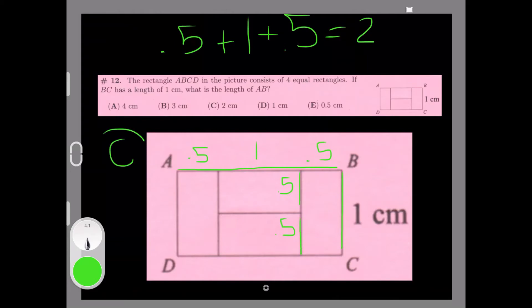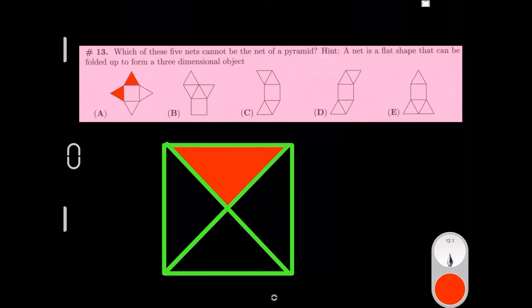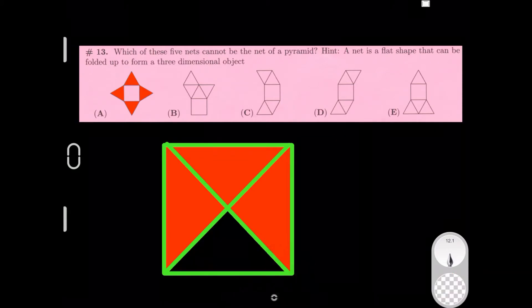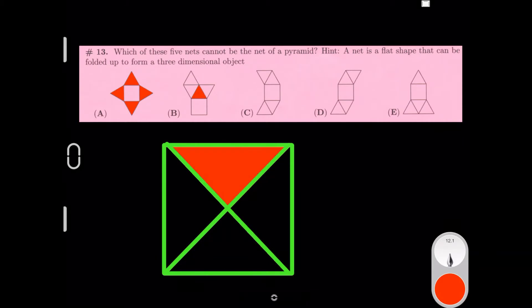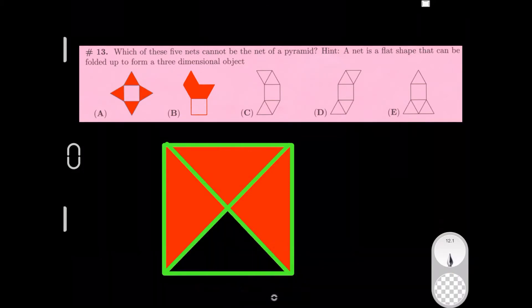So our answer is C. These five nets cannot be the net of a pyramid, so let's look at the first one. This piece right here can go here, this piece right here can go here, this piece right here can go here, and this one can go there. So A does work. Now let's look at the second one. This can go right here, these two side pieces can go right here, and this top piece can come right here. So that makes B work.